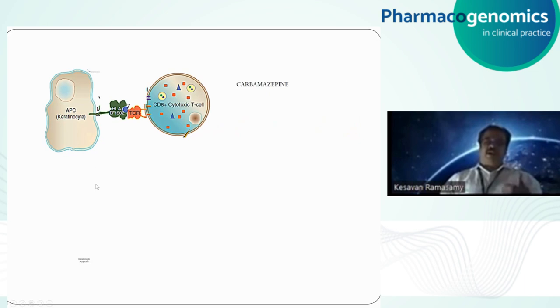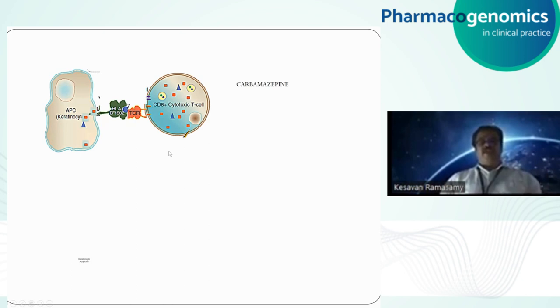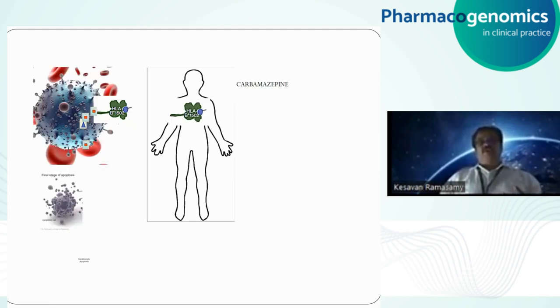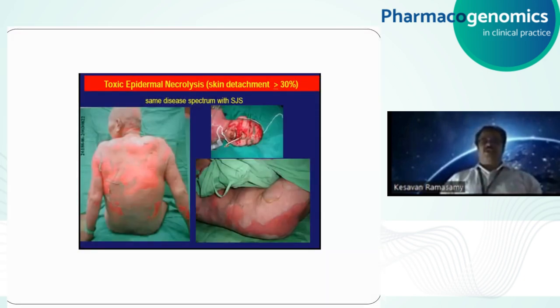The CD8+ cytotoxic T cells, once activated, release cytotoxic mediators like granzymes and perforin, which attack the antigen-presenting keratinocytes and cause massive apoptosis. Because of this apoptosis, skin detachment is seen — causing the SJS or TEN reaction. Most of these patients may likely die. That is why the FDA issued a black-box warning for carbamazepine and phenytoin — patients must be screened for HLA-B*1502 before prescribing, especially those in oriental groups such as Chinese and Taiwanese populations, who are the most vulnerable.